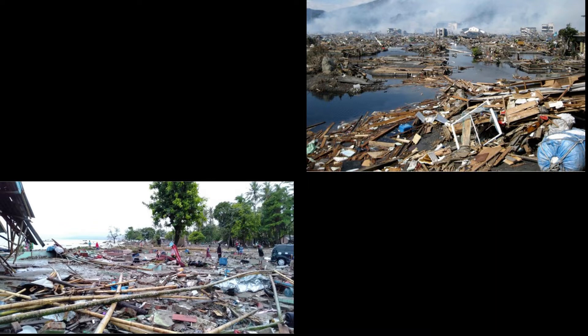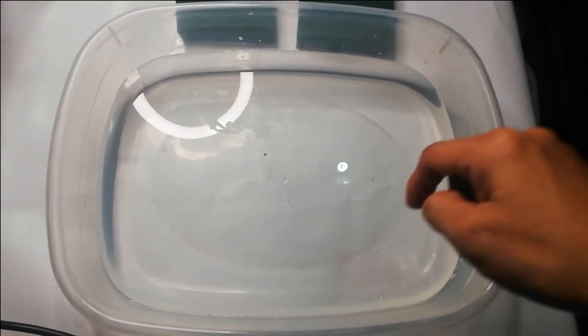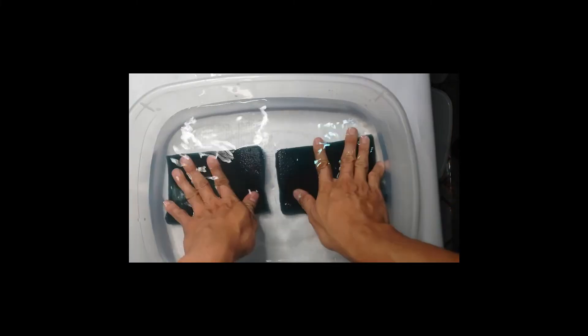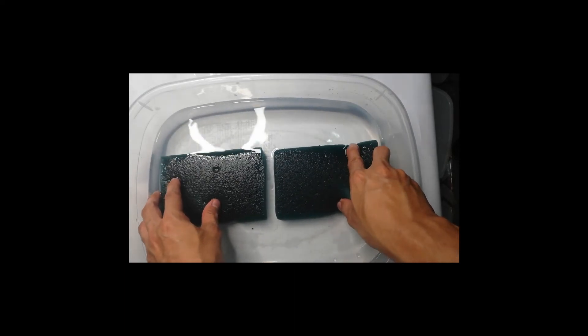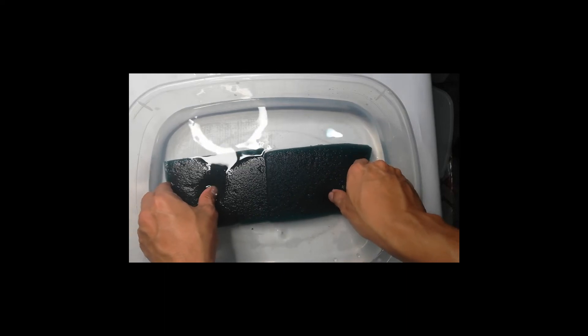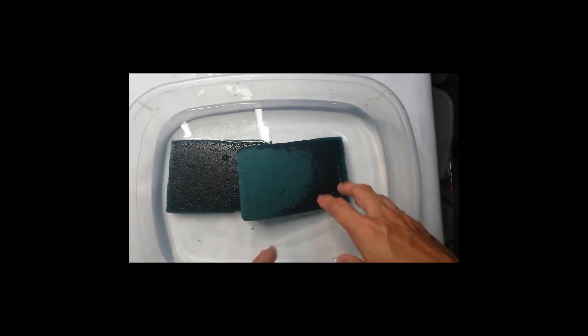Now let's explain the processes that occur along a convergent boundary between two oceanic crusts. For this experiment, we will need a rectangular basin or food tray half filled with water, two pieces of foam, and a flat surface. Submerge the two foams into the basin containing water and arrange them at least two centimeters away from each other. Slowly push four centimeters inward on each outer end of the foam and observe what happens.